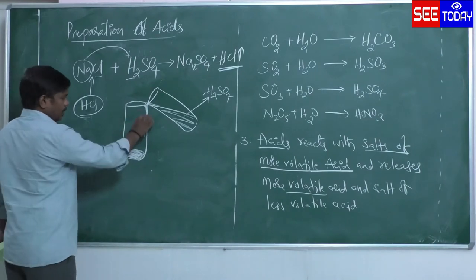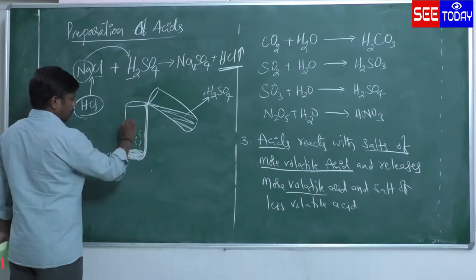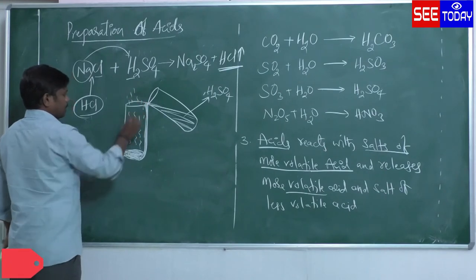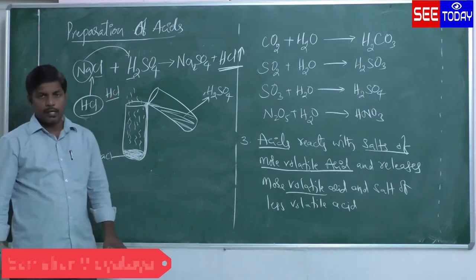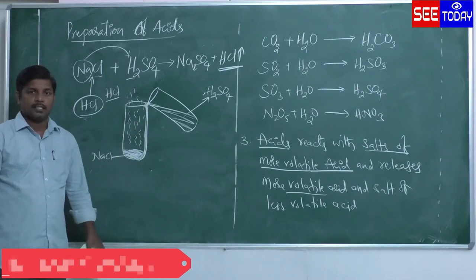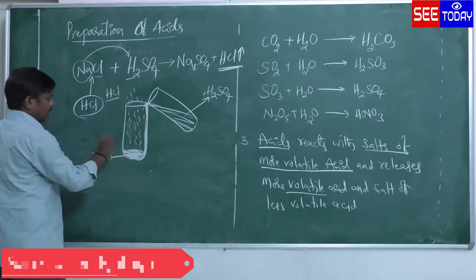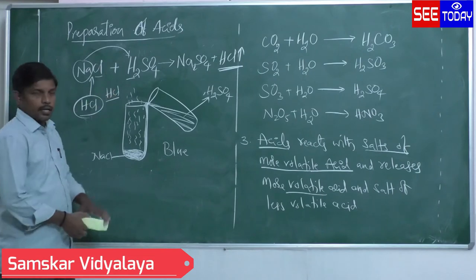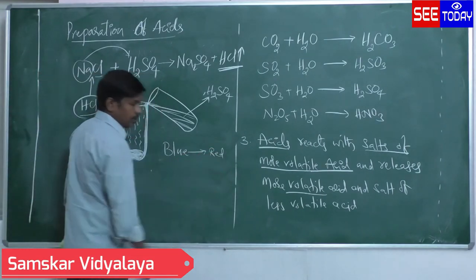When you add the acid and it touches the salt, automatically you will get some vapours coming out of the test tube. Those vapours are nothing but HCl vapours. To confirm that the produced substance is an acid, we use the litmus paper test. If you take blue litmus paper and hold it near, it automatically turns red — turning blue litmus paper to red is a property of acid.